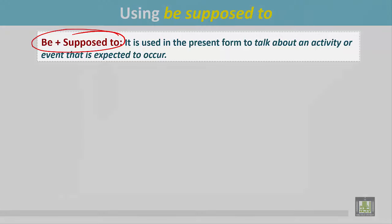Be plus supposed to is used in the present form to talk about an activity or event that is expected to occur.